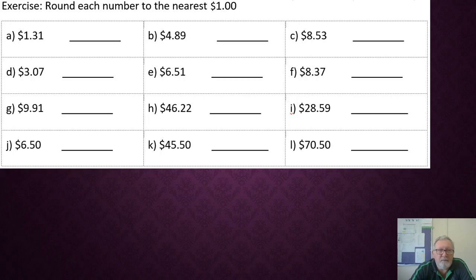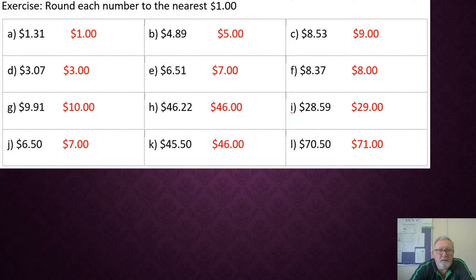Let's check your work. Here are the answers. $1.31 is rounded to a dollar. $4.89 is close to $5. $8.53 is close to $9, and so on through. So, pause and correct your work. Make sure you are marking it, tick or cross, writing the correct answer if you were wrong, so you can have a look later on.